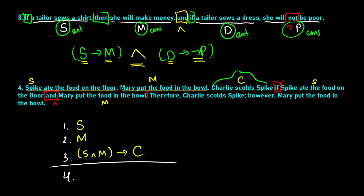Our final sentence: therefore Charlie scolded Spike, however Mary put the food in the bowl. 'Therefore' just signals we're at the end of the argument, so we don't translate it as a logical operator. 'However' is like AND — it has a contrast meaning but still means both facts are true. So our final sentence is C AND M: Charlie scolded Spike and Mary put the food in the bowl.